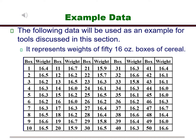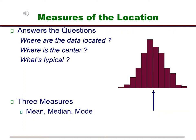Let's start with measures of location. Measures of location answer the following questions: What value is typical? Where is the center of the data? Where is the data located? The three measures of location we are going to look at are the mean, median, and mode.